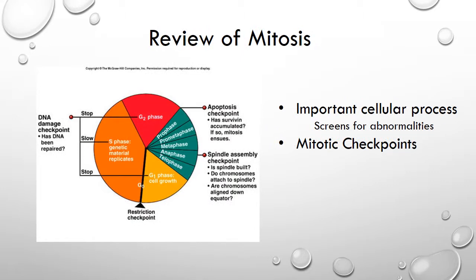Mitosis is a normal process that all cells must use to sustain life. Simply put, it is the type of cell division that results in two daughter cells, each having the same number and kind of chromosomes as the parent cell. The cell cycle contains multiple checkpoints, which ensure correct transmission of genetic information. They screen the chromosomes for abnormalities and must be passed before moving on to the next stage of mitosis. If errors are found, mitosis is stopped and apoptosis, or programmed cell death, occurs.